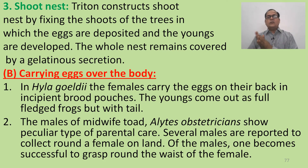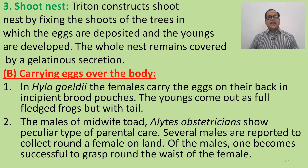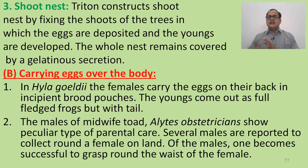Second method is carrying eggs over the body — carrying eggs on the parent's own body to protect them from predators. The first example is Hyla geoldi: the female carries eggs on her back in incipient brood pouches, and the young come out as full-fledged frogs, but with a tail.